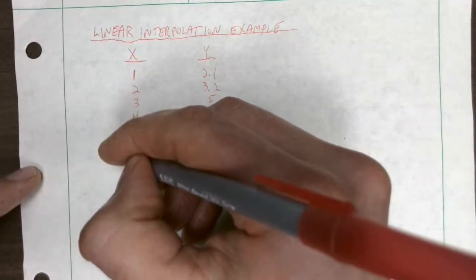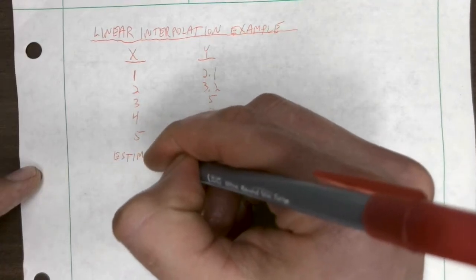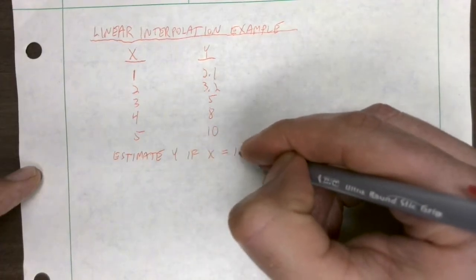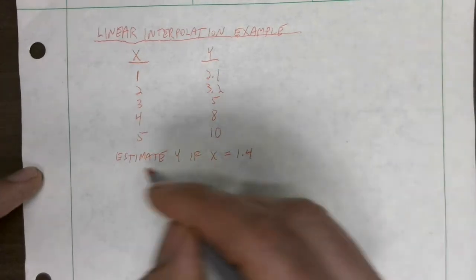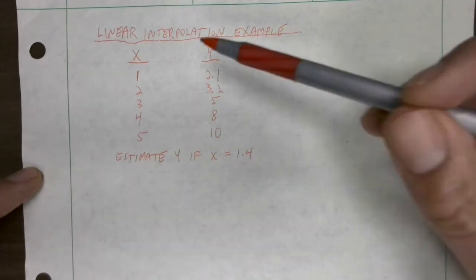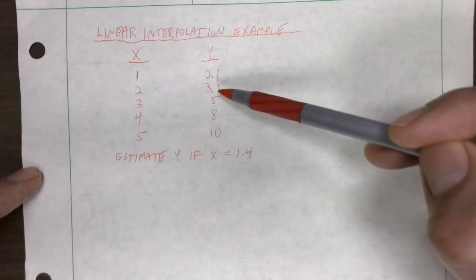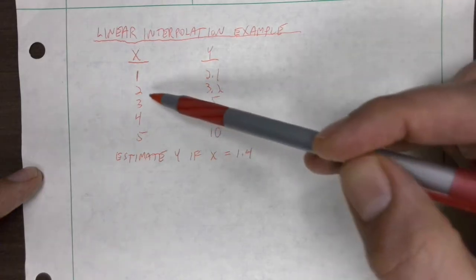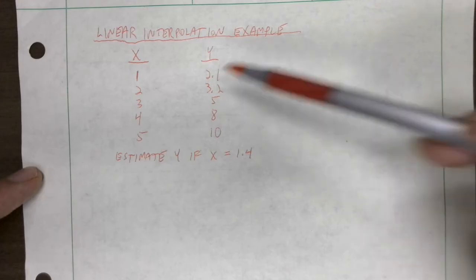So given these values, estimate y if x equals 1.4. This is a situation where we use linear interpolation because if we knew x is 2, then y is 3.2 - we just look it up. But here we don't have the value at 1.4, but we have the value at 1 and 2, so we can use that information to make a pretty good estimate.